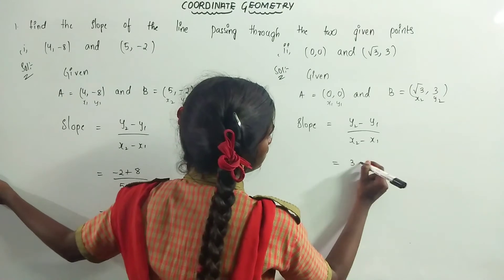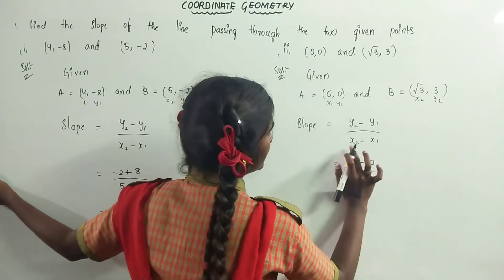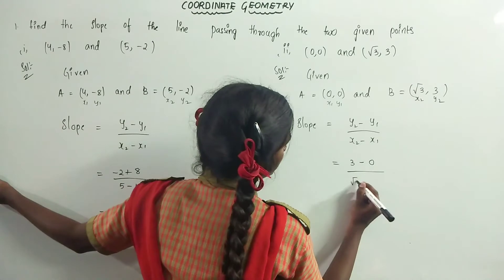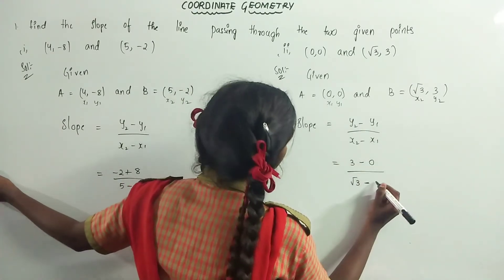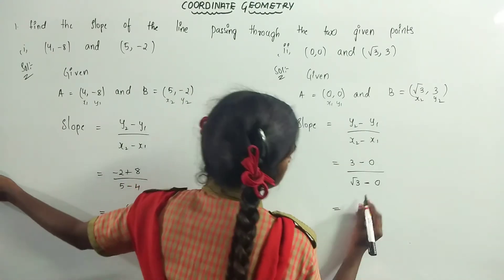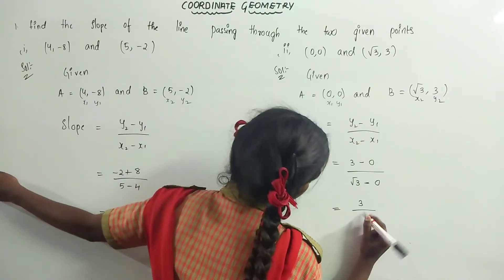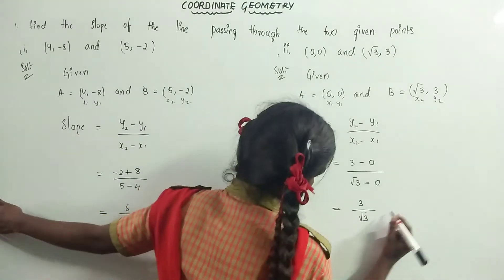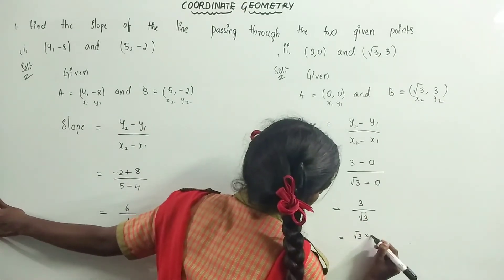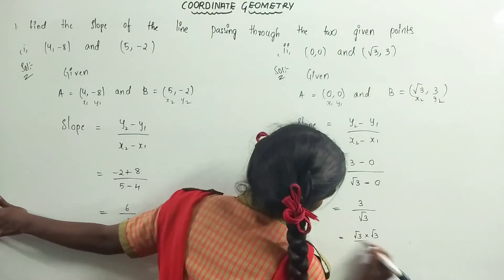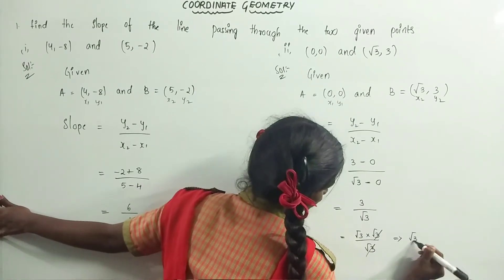y2 is equal to 3, minus y1 is equal to 0, by x2 is equal to √3, minus x1 is equal to 0. So we get 3 minus 0 equals 3, by √3 minus 0 equals √3. The numerator can be written as √3 into √3, by √3. √3 gets cancelled, giving √3.